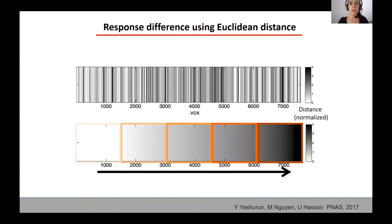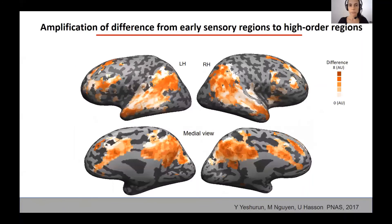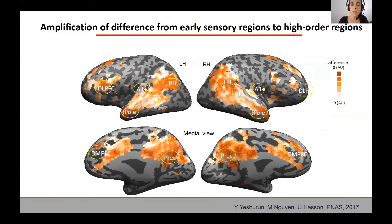This resulted in Euclidean distance values for each of the voxels involved in processing the stories. We then sorted the voxels according to their Euclidean distance and divided them into five bins — the first with the smallest difference in the neural response and the last with the largest difference. We wanted to see where these bins are located in the brain. This is the map of the distance in the neural response between the two stories. In lighter colors are voxels with a relatively small difference in brain response, and in darker colors are voxels with a relatively large difference. You can see that early sensory regions had relatively small differences, and this difference got larger and larger in higher order regions.